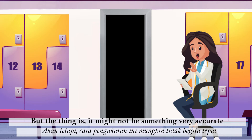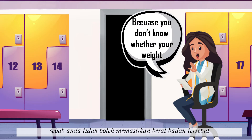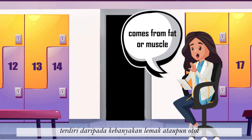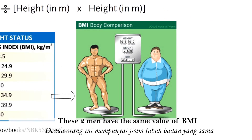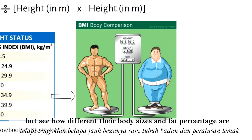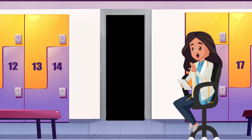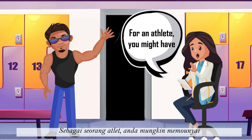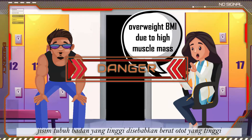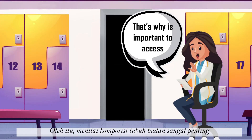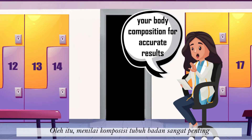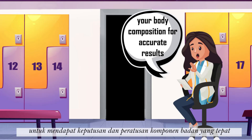But it might not be very accurate, because you don't know whether your weight comes from fat or muscle. For example, these two men have the same value of BMI, but see how different their body sizes and fat percentage are. For an athlete, you might have an overweight BMI due to high muscle mass. That's why it's important to assess your body composition for accurate results.